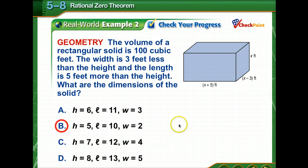I set it up as x times x minus 3 times x plus 5 equals 100 because we're told the volume is 100. I have only one sign change. The factors of 100 that I tested, I started out with 10 and then ended up finding that the height is 5 and the width is 2.